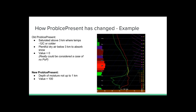Let me do a couple of soundings. In this sounding example, the old prob ice method — you've got a saturated layer above three kilometers but it's all dry below that. So old prob ice would give you a zero value, and that's what you get out there right now. If you look at the sounding with that dry air, you can actually consider it a case where you wouldn't need a POP. But the new prob ice says the depth of moisture isn't up to one kilometer, so now it assigns a value of 100.